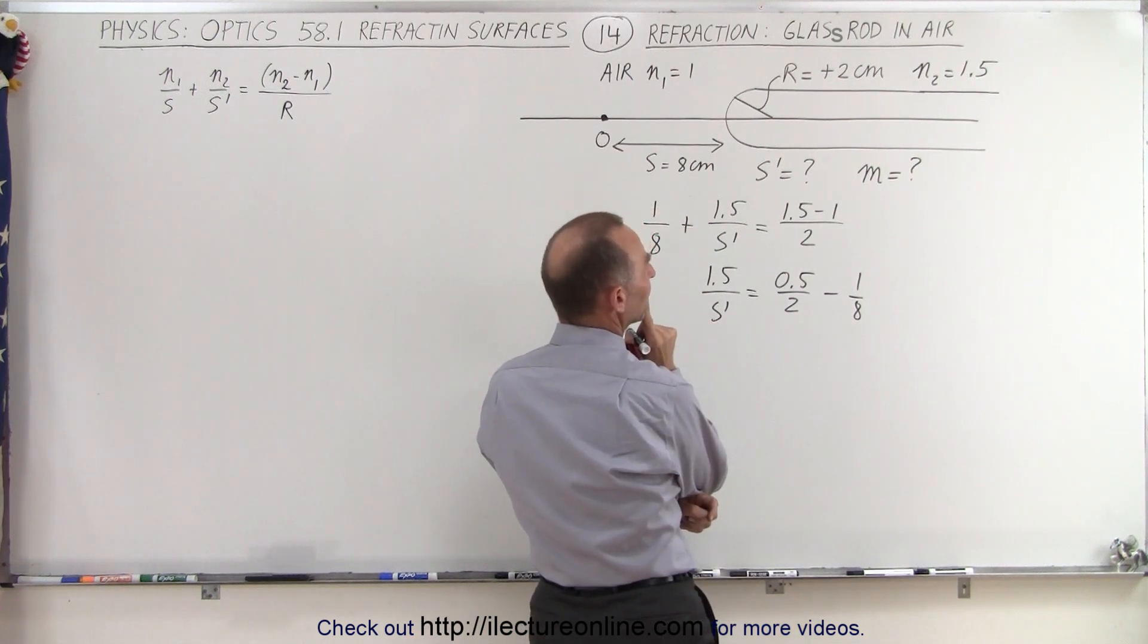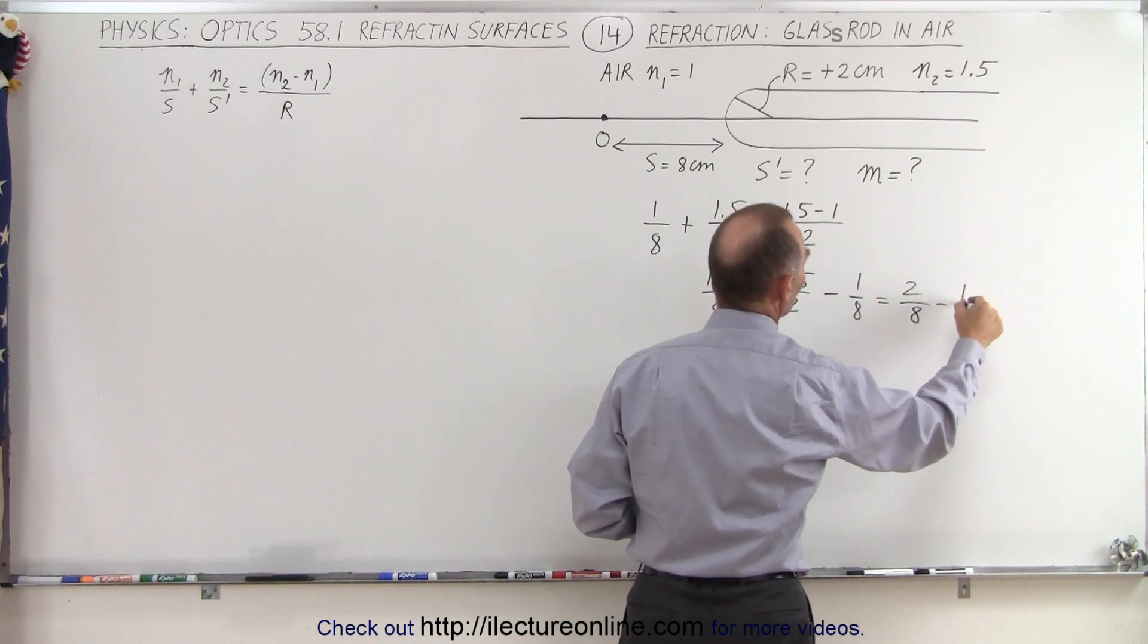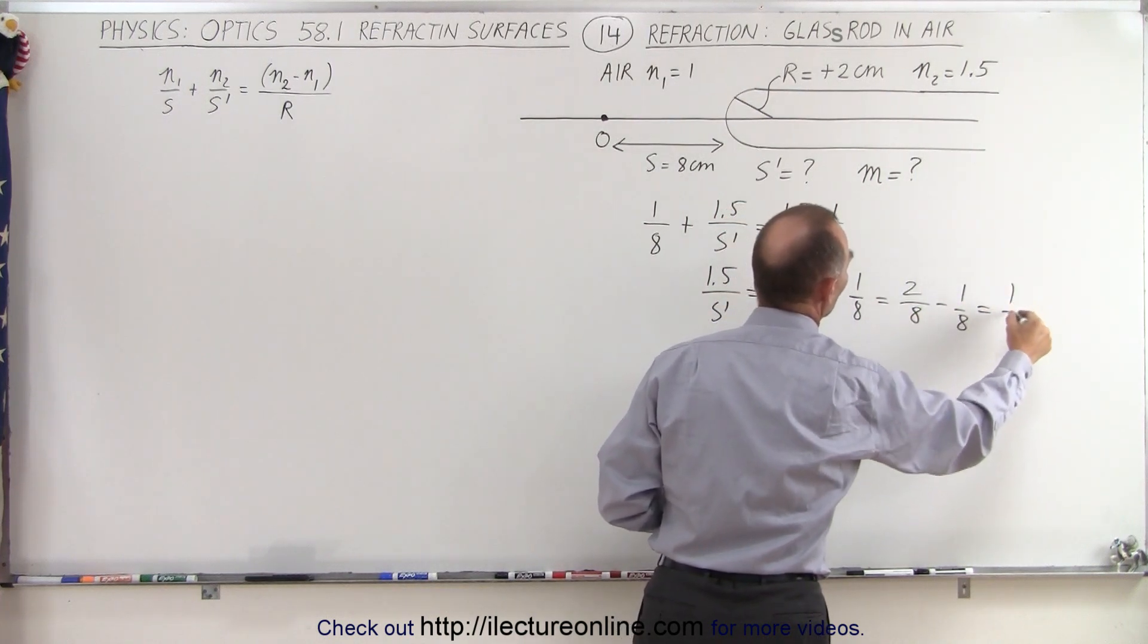Notice the common denominator here is going to be 8, so this becomes equal to 2 over 8 minus 1 over 8, which is equal to 1 over 8.